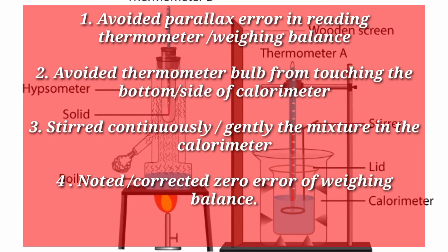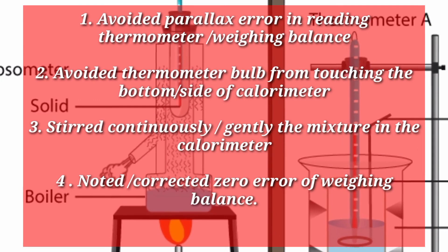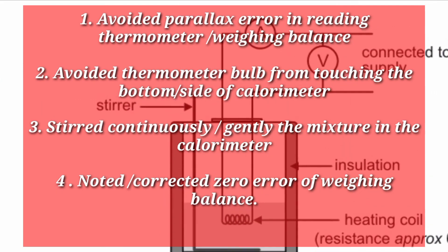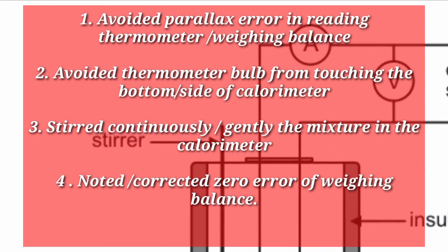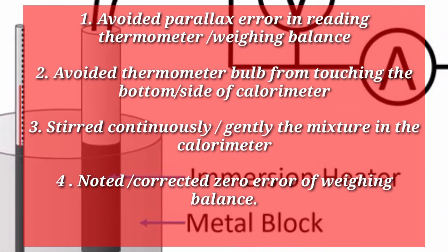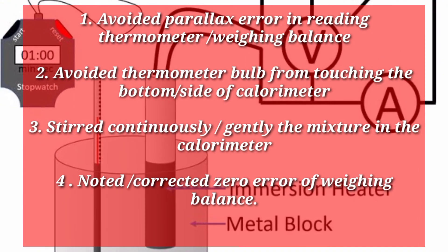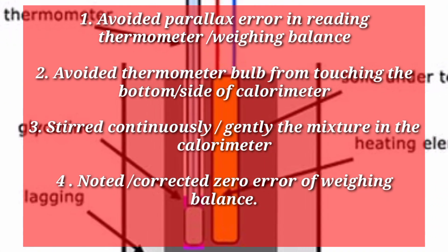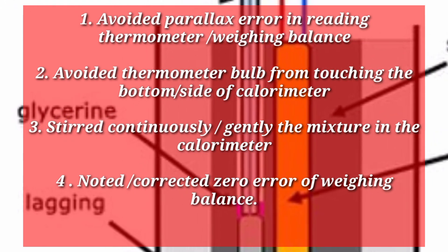Additional precautions: Avoided parallax error in reading thermometer or weighing balance. Avoided thermometer bulb from touching the bottom or side of calorimeter. Stirred continuously and gently the mixture in the calorimeter. Noted or corrected zero error of weighing balance.